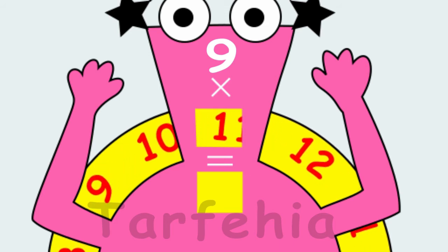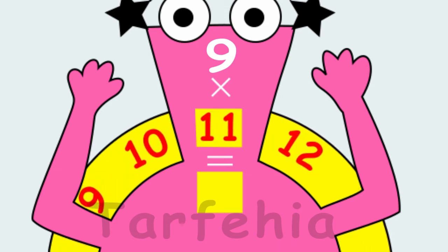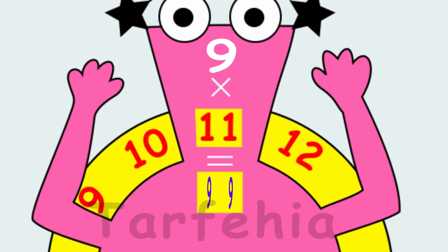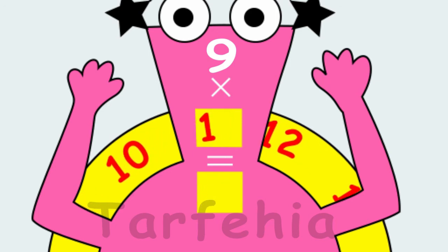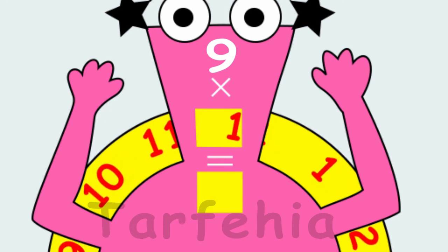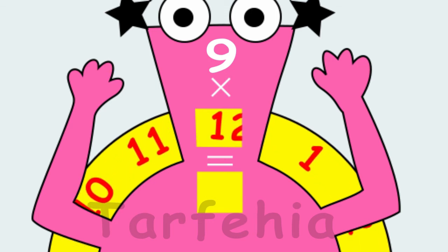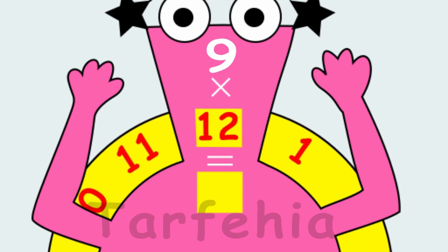9 times 11 equals 99. 9 times 12 equals 108.